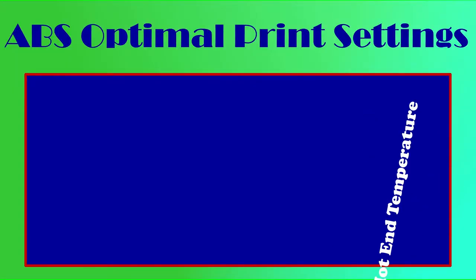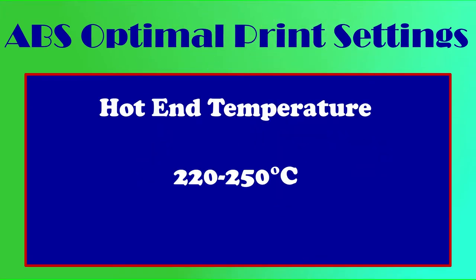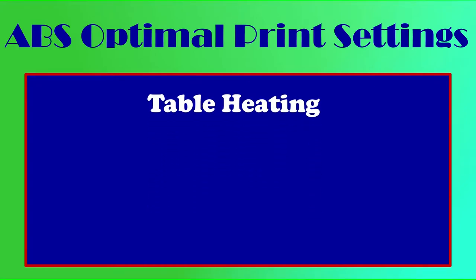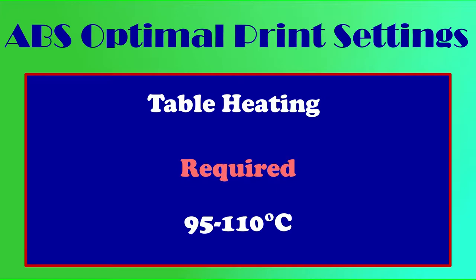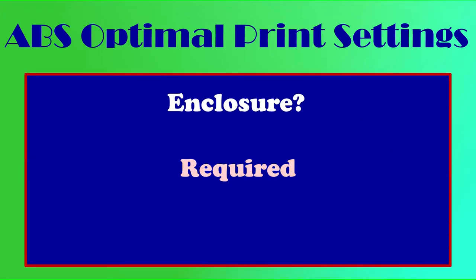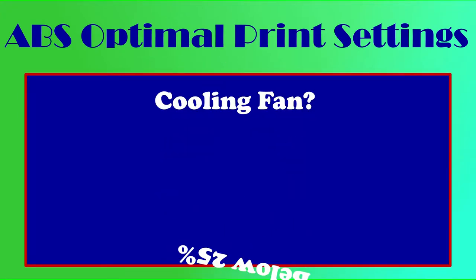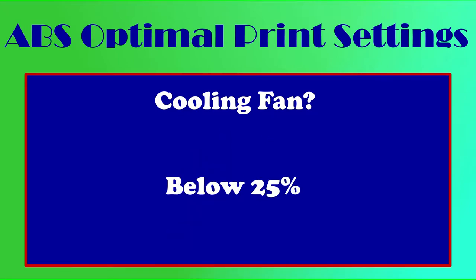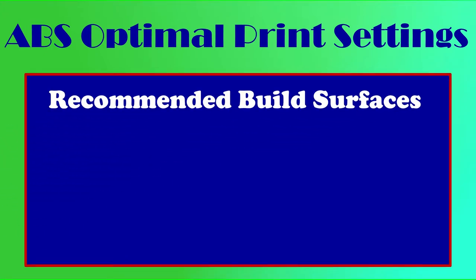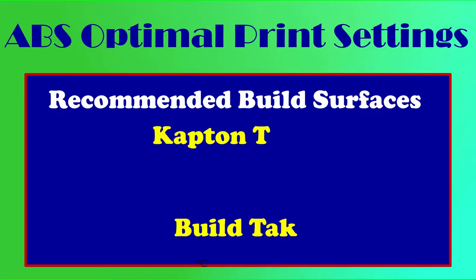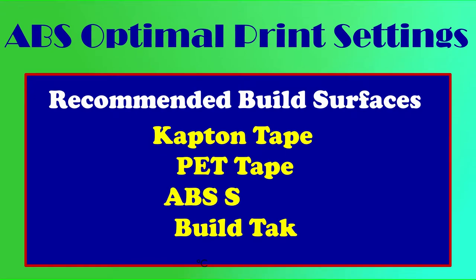On to the optimal print settings for ABS. You're going to want a hot end temperature of 220 to 250 degrees Celsius. Table heating is a must and should be between 95 and 110 degrees Celsius. ABS also really prefers an enclosure to stop your part from cooling unequally — we recommend around 50 to 70 degrees Celsius for that. When it comes to cooling fans, there's a lot of debate: if you're bridging, go up to 25% on your cooling fan; if you're not bridging, less is more. For build surfaces, you'll want to print on build tack, Kapton tape, or PET tape, though you're still likely going to want to use an ABS slurry, glue, or juice.